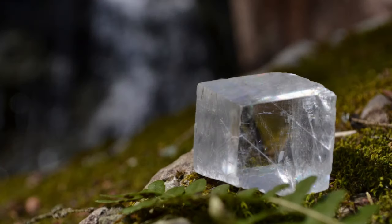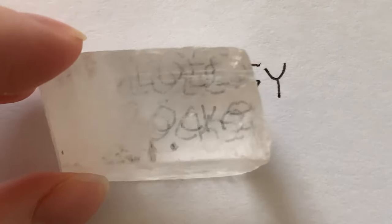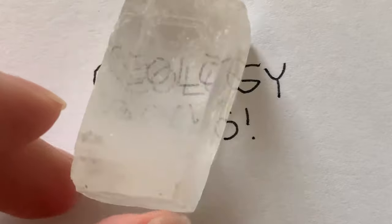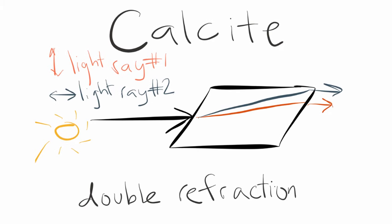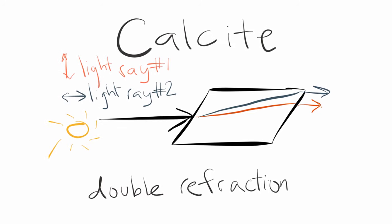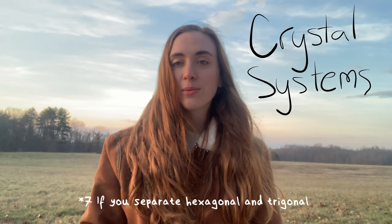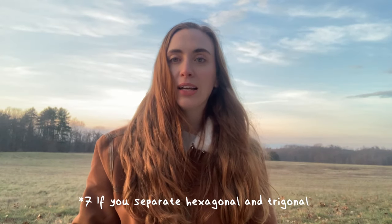The bonds that hold together a diamond are much stronger than the bonds that hold together graphite. A great way to demonstrate that minerals have an internal structure is optical calcite — if you take a piece of clear calcite and put it over a piece of paper with writing on it, you'll see double what the writing really is. This is because light travels through the mineral through that internal structure and is reflected, so when you look at it you see that double vision.